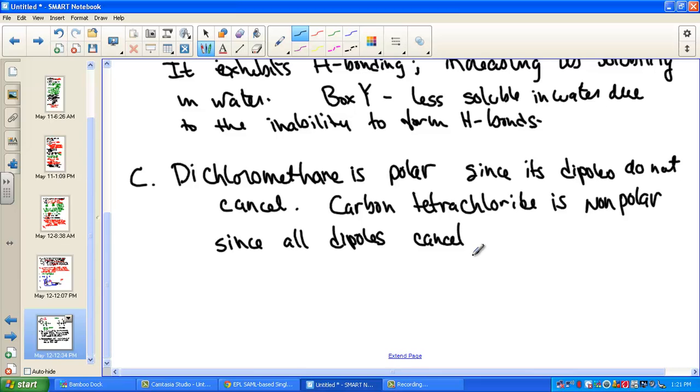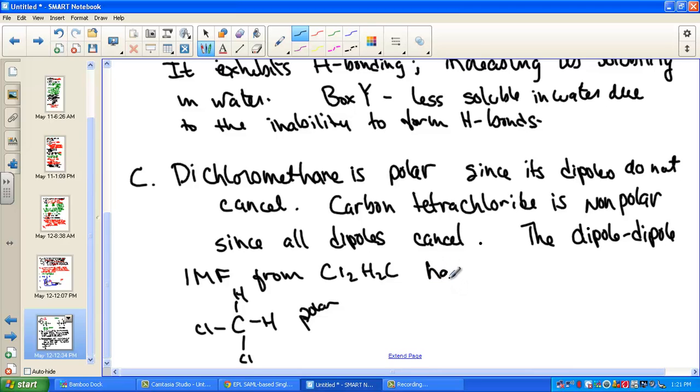And just really important that we said it is polar. It's unsymmetrical would be another way to say that. Carbon tetrachloride, our second structure, carbon tetrachloride is non-polar. A completely symmetrical molecule. No areas in which the dipoles would not cancel. So it's non-polar since all dipoles cancel. In other words, you could say it's a symmetrical molecule. So we have dipole-dipole forces in the first structure. It's a polar molecule. The dipole-dipole intermolecular forces from dichloromethane, Cl2H2C, CH2Cl2. So we have this dipole-dipole. It's a polar structure. Dipole-dipoles, intermolecular attractions, will have a greater solubility in water.